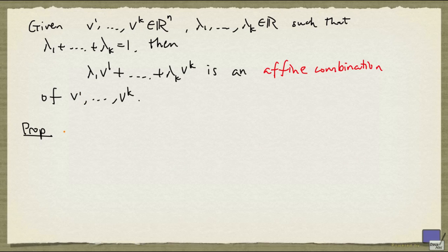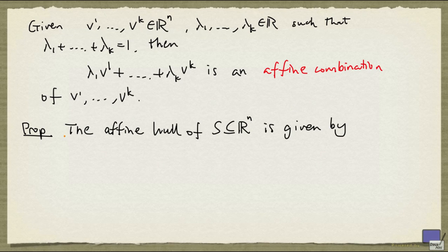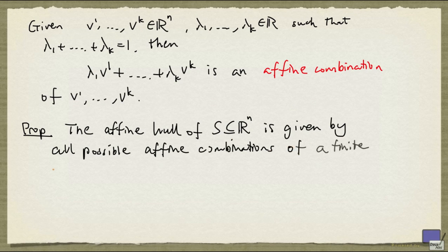Once we have defined an affine combination, we can state what the affine hull of a set is. The affine hull of a subset S of R^n is given by all possible affine combinations of a finite number of elements of S.